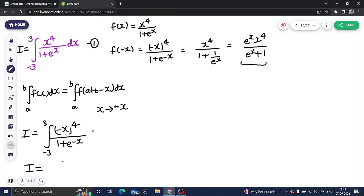i is, dx is obviously there. i will be minus 3 to 3, e power x, x power 4 divided by e power x plus 1. Now, why I have written x power 4 separately? Because I will do one adjustment here. I will add 1 and subtract 1.